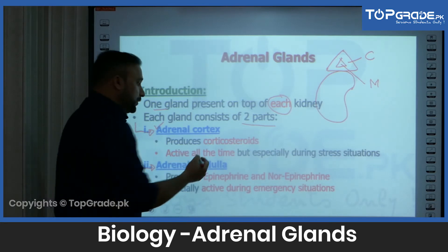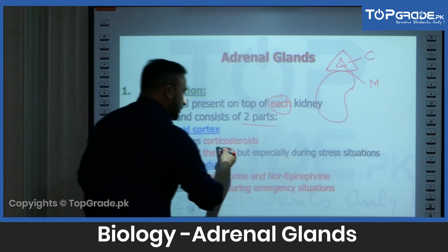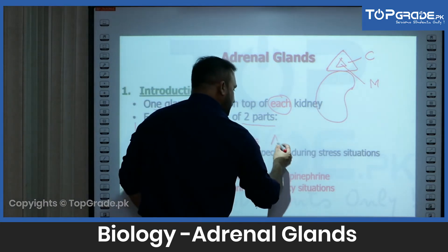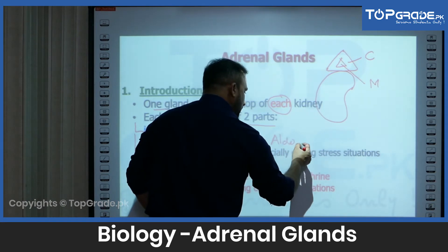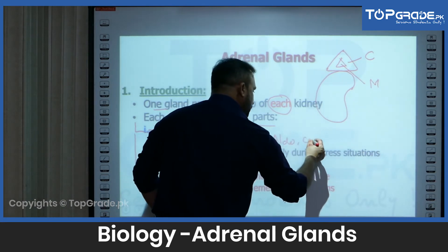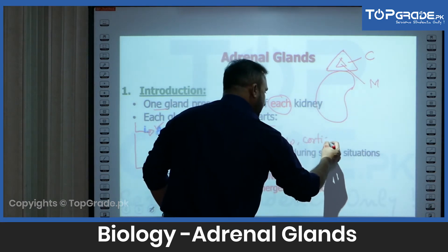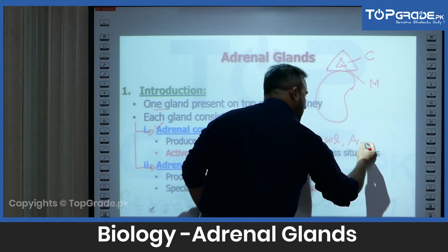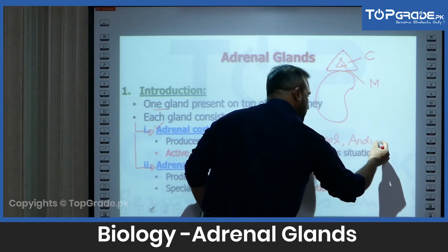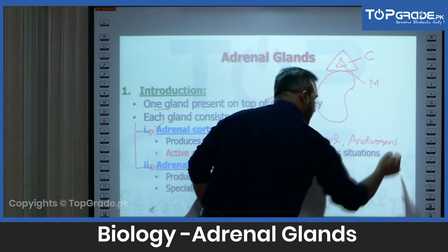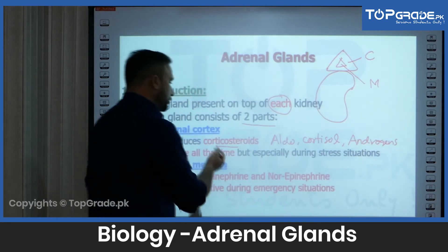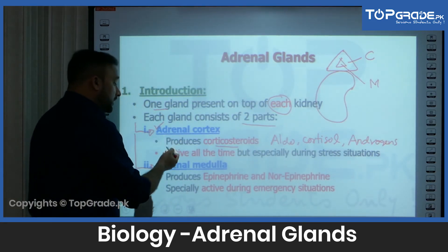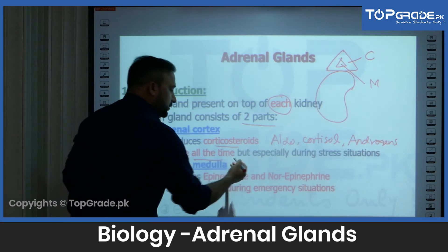Let's first talk about the adrenal cortex. The adrenal cortex actually produces the corticosteroids — it produces aldosterone, cortisol, and the androgens. These are the hormones produced by the adrenal cortex, and it produces several corticosteroids. It is active almost all the time.